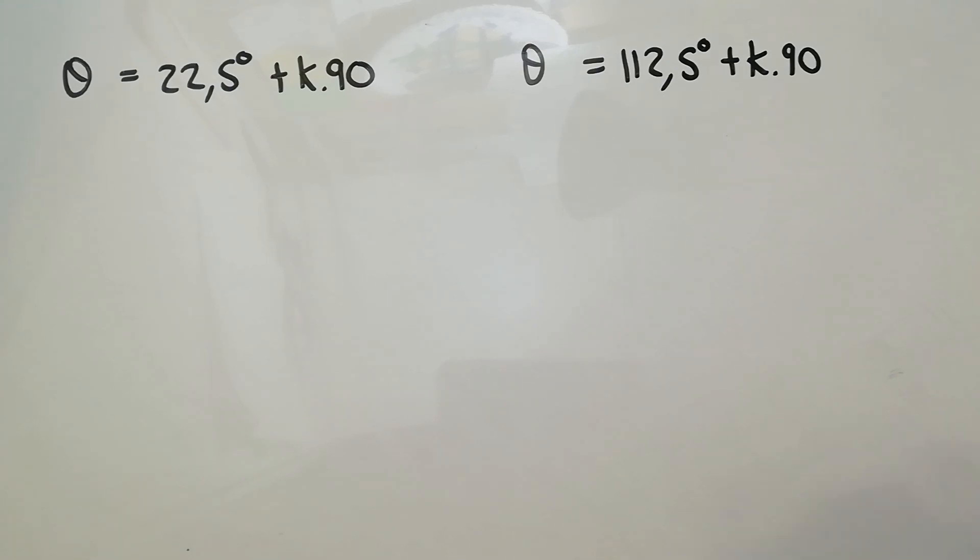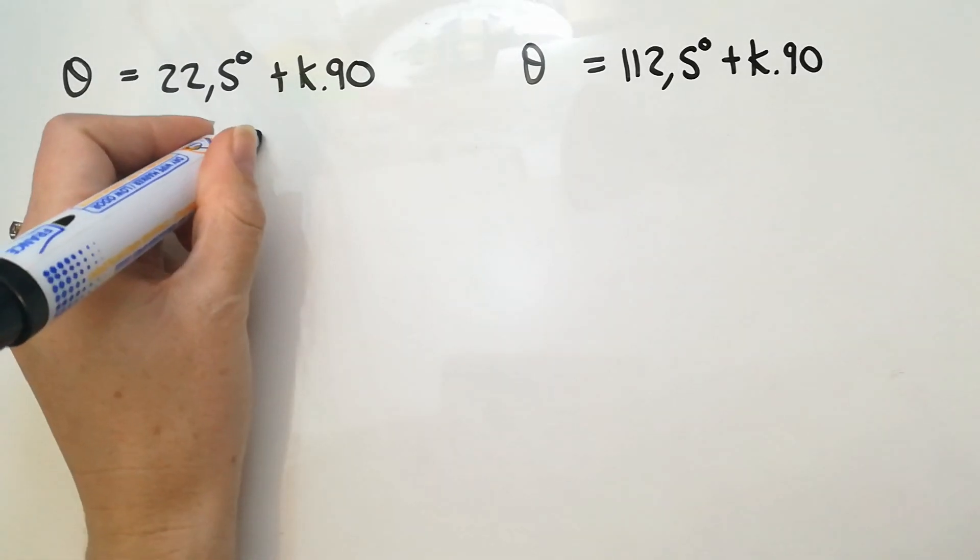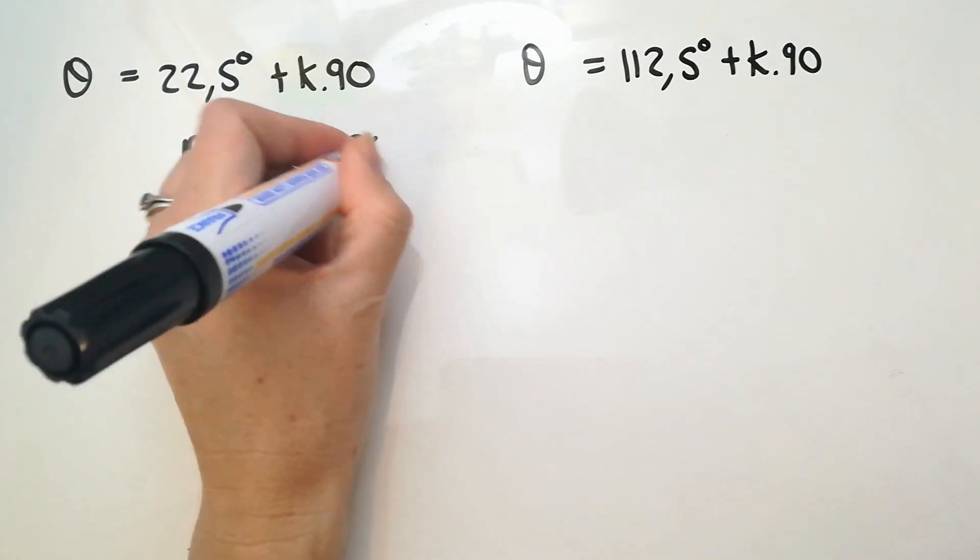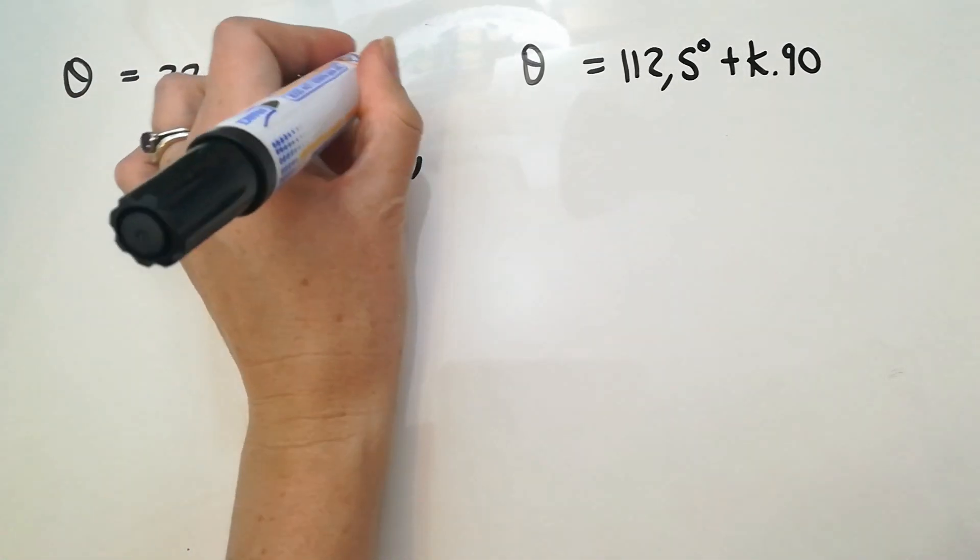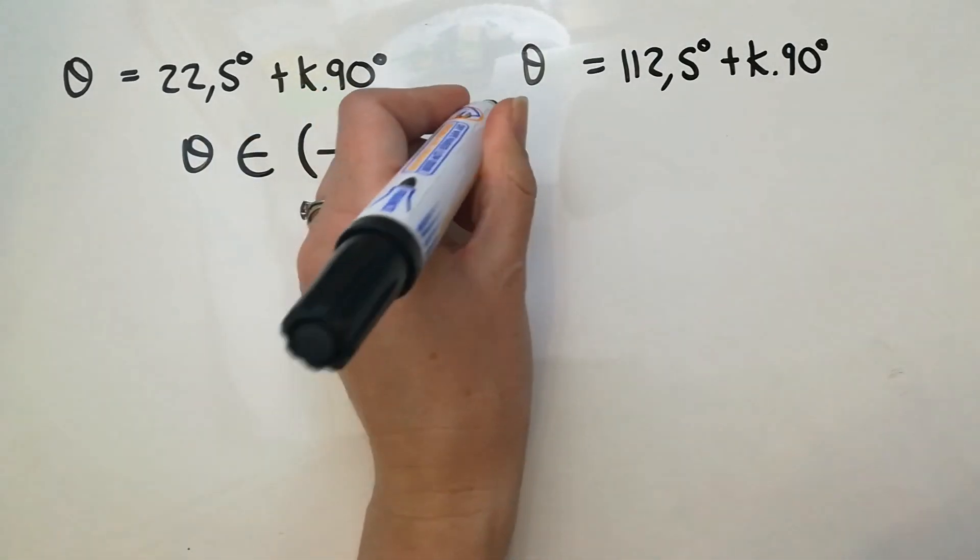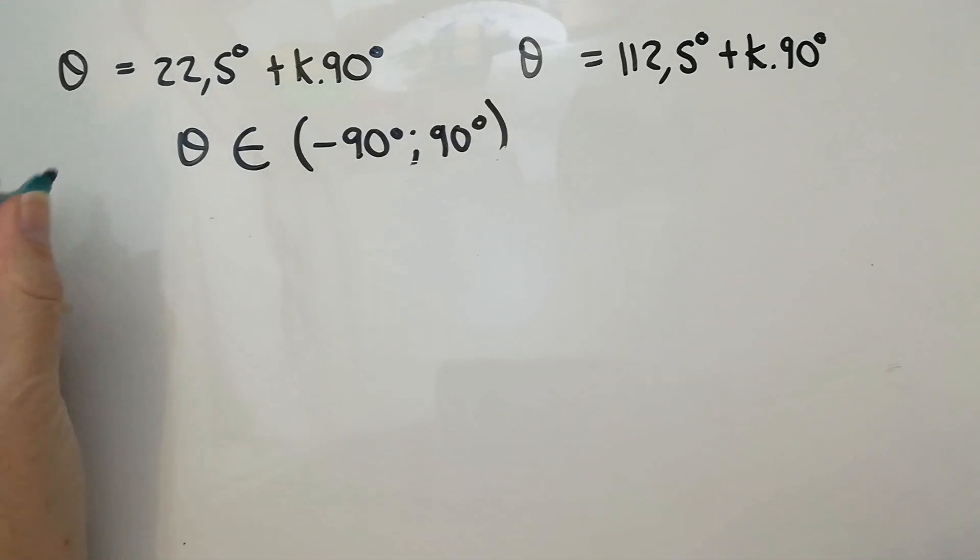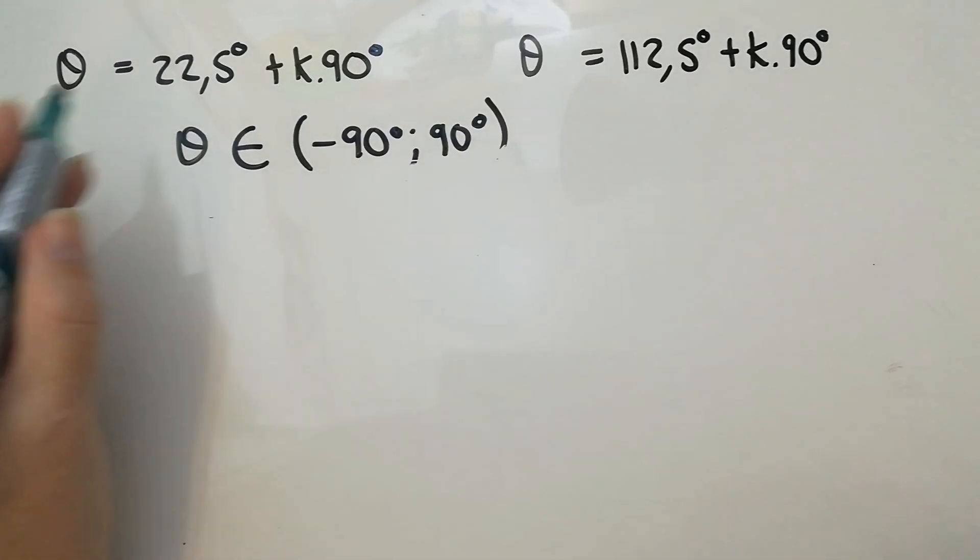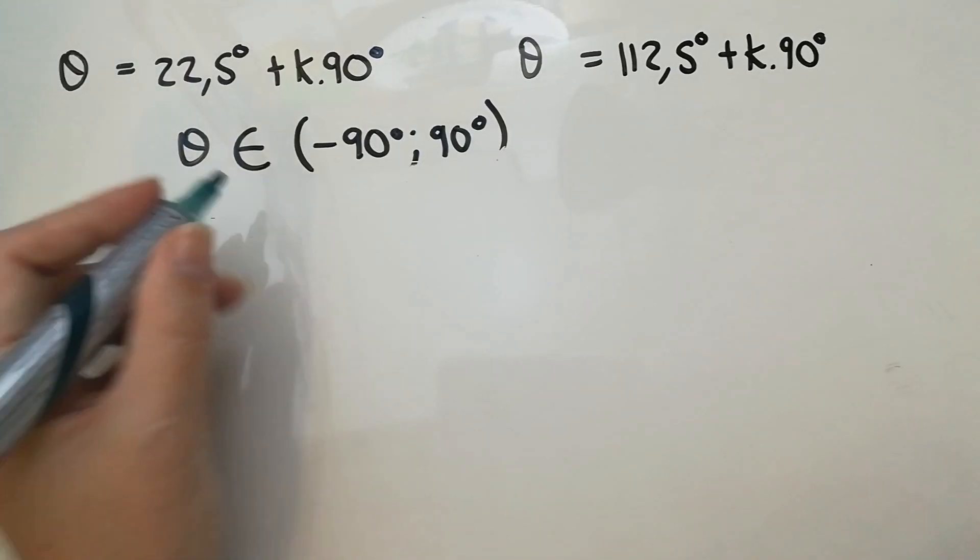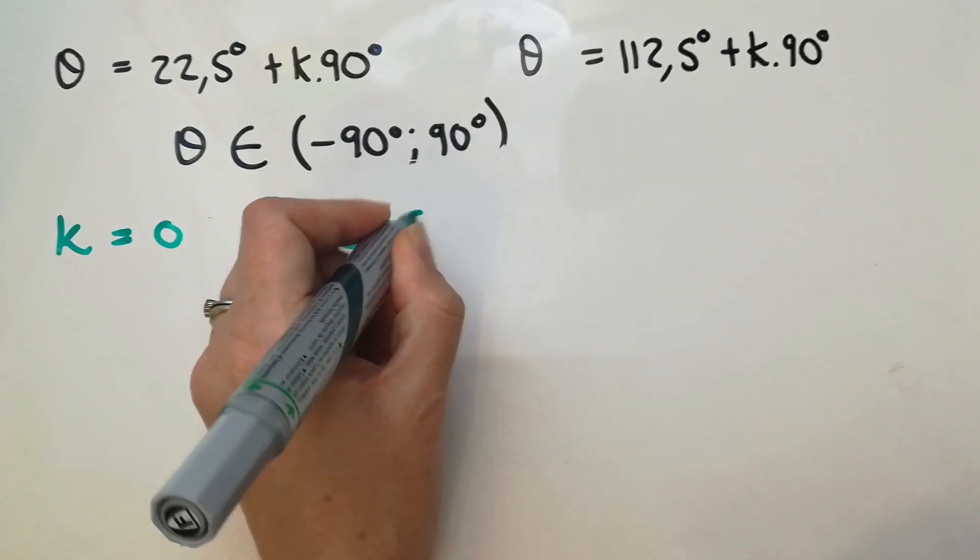Let's pretend that in this one, you are given restrictions. So let's add on a restriction. Now this wasn't in the beginning of the question, but I'm putting it in now. So let's say we said it goes from negative 90 degrees to positive 90. So in this one, in quad one, if k equals zero, I'm going to have θ as 22.5 degrees.